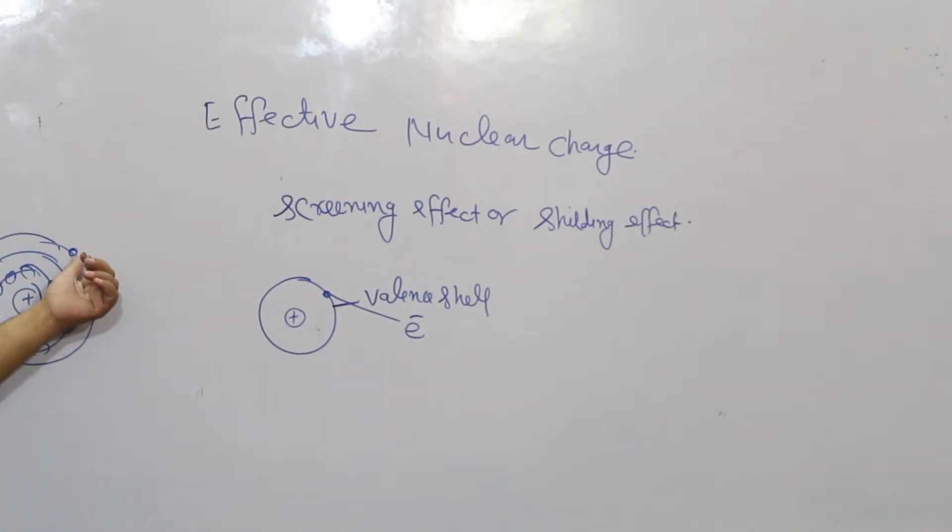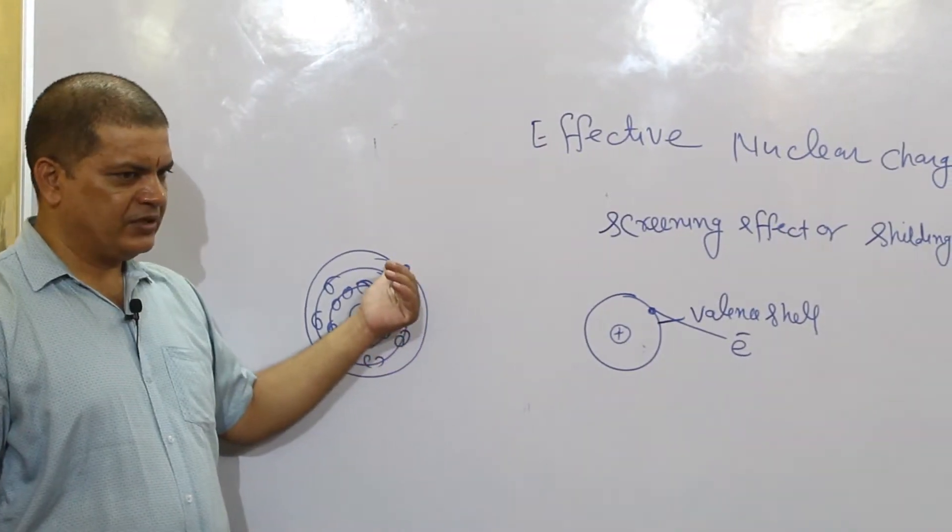This electron is in the valence shell, but the electrons in the inner shells will repel this electron. Same charges repel. How does this affect effective nuclear charge?